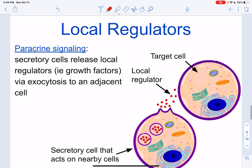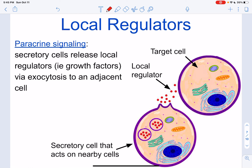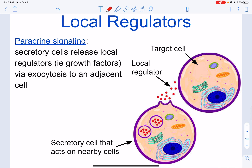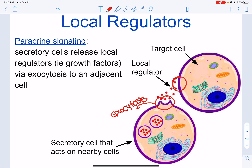With paracrine signaling, this involves the pancreas — think of releasing insulin. Secretory cells secrete signals and release local regulators, such as growth factors, via exocytosis. The target cell absorbs these local regulators through endocytosis. Endo means bringing in, exo means bringing out.